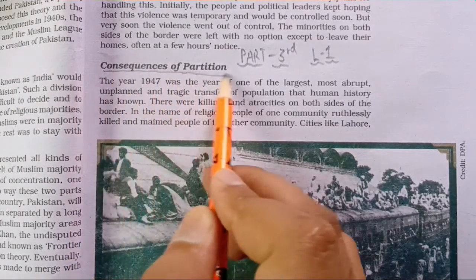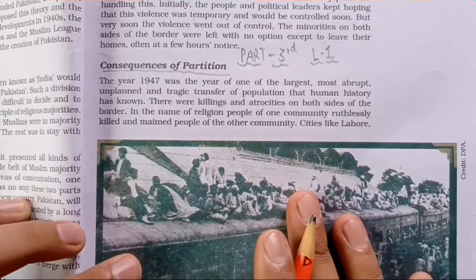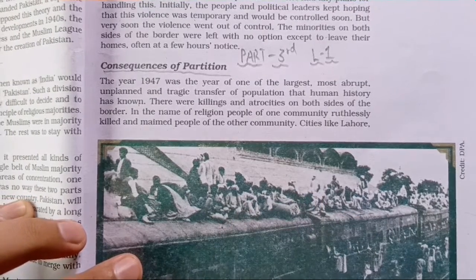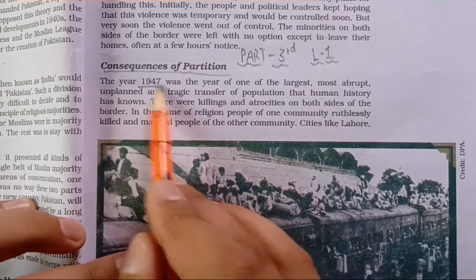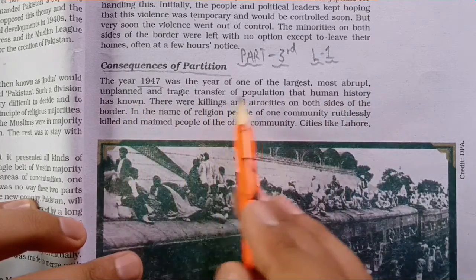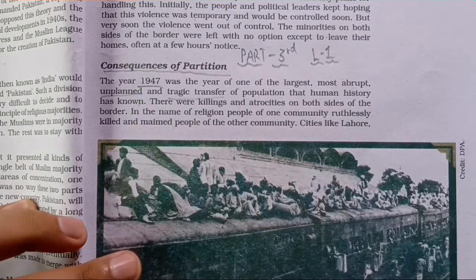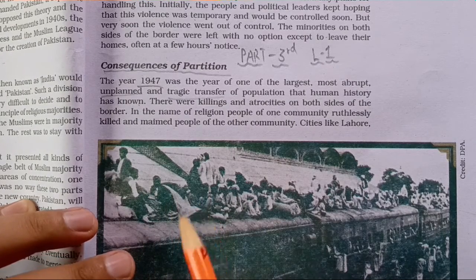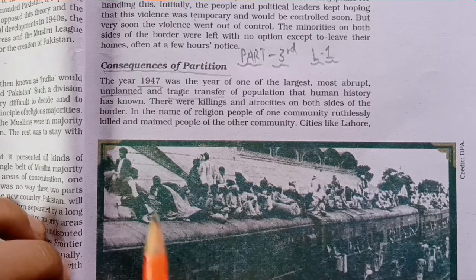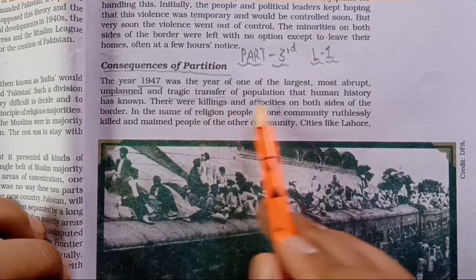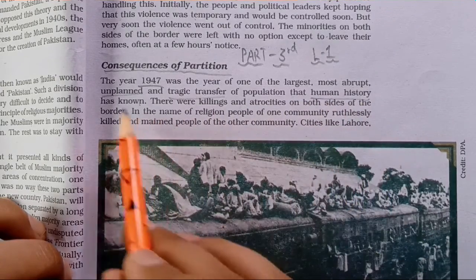The consequence of partition is one of the most important topics — you will get direct questions worth four or six marks on what were the consequences of partition. The year 1947 was the year of one of the largest, most abrupt, unplanned, and tragic transfers of population that human history has known. This was unplanned; no one had thought it would be so destructive, with so much killing and atrocities, and it was unexpected and uncontrollable at a certain period.